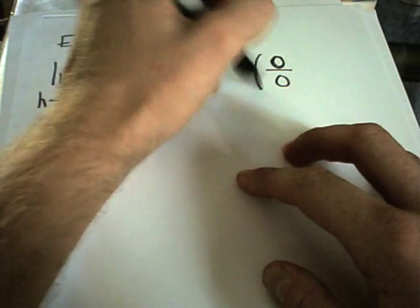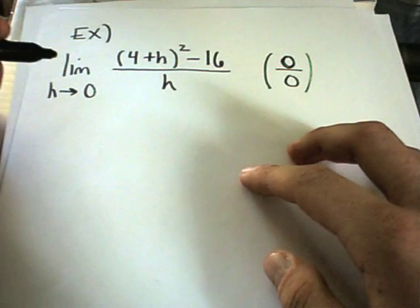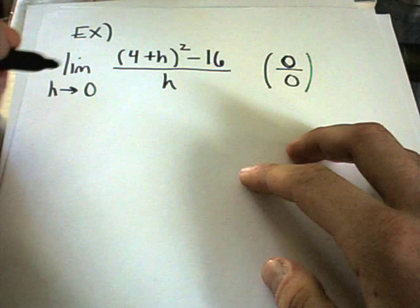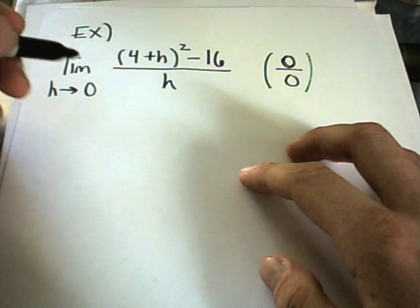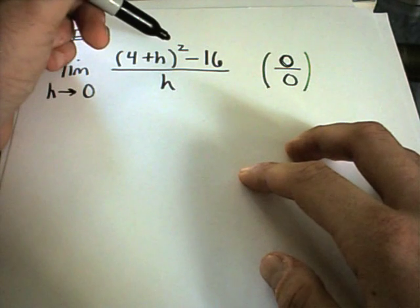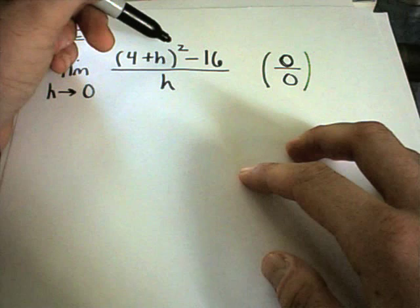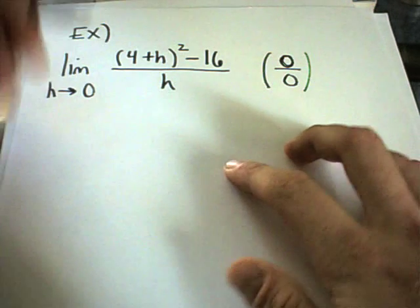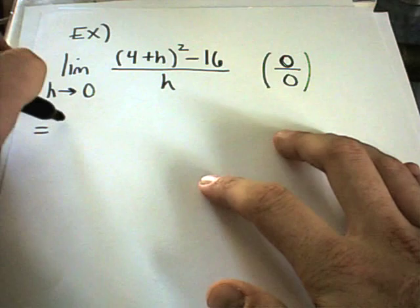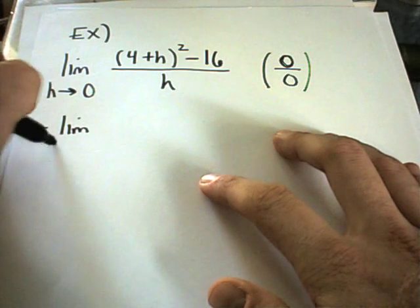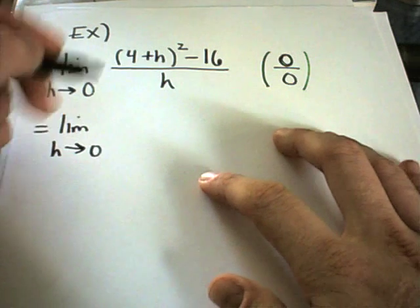So we have to do something algebraic to figure out what's going on here. Notice the only thing I see right off the bat is there's this 4 plus h squared. So we could expand that out and see if something cancels out.